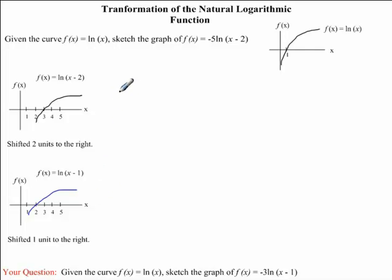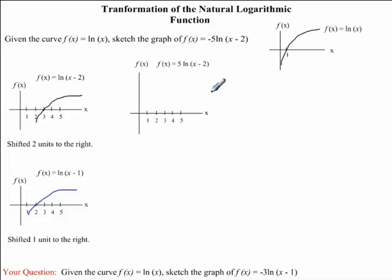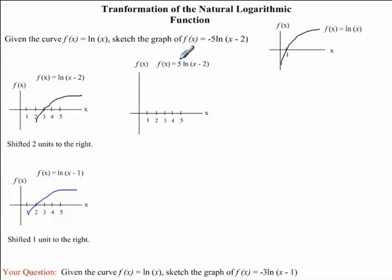Now coming back to the question we are working on together, we are going to apply our second transformation — this 5 in front of the ln. So we are going to draw another graph. On this graph, we will be drawing f of x equal to 5 ln of x minus 2. This graph is going to be very similar to our previous graph, since they both have the function ln of x minus 2, except now we are multiplying everything by 5.